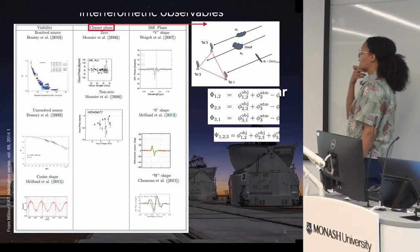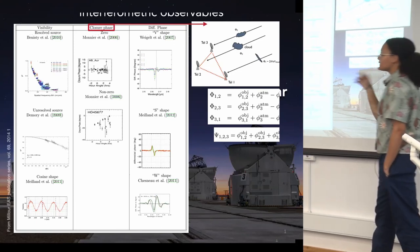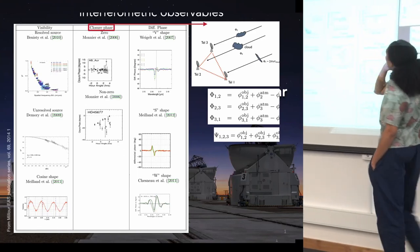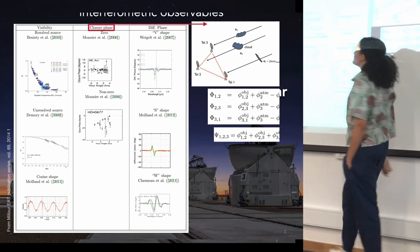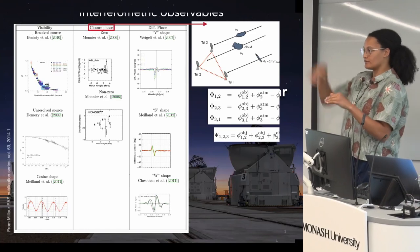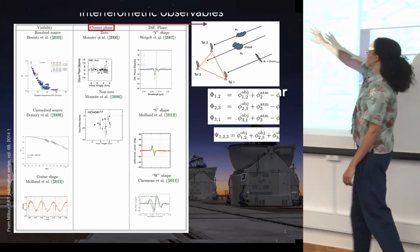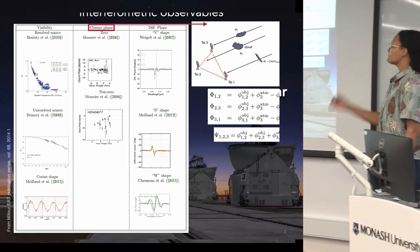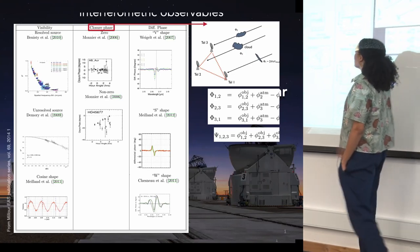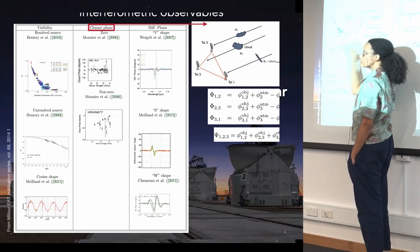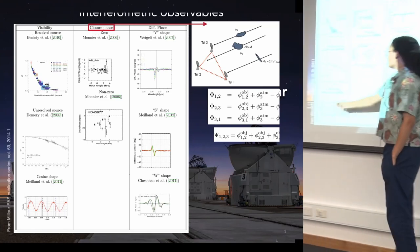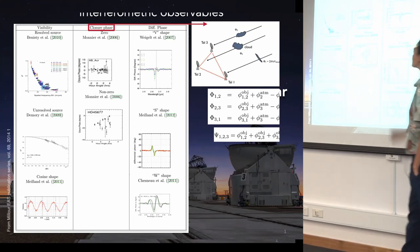We have different observables compared to standard imaging. The first observable is the visibility, related to the amplitude of the fringes we're observing. When we combine our signals from our telescopes, we interfere them and get an interference pattern, and the amplitude of those fringes relates to the visibility. This essentially tells us about the spatial extent of our system. If you have a completely unresolved source, your visibility will be one. If you have a very over-resolved source, it will be closer to zero. If you have a resolved source like a disk, you can see a clear drop-off in your visibility, and if you have a perfectly equal brightness binary, you can look for a sinusoidal pattern.